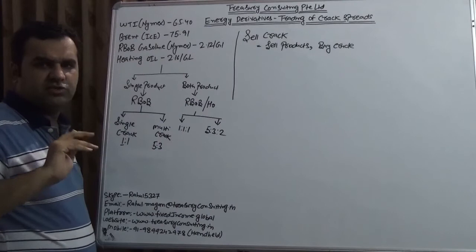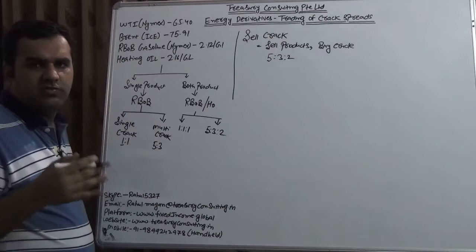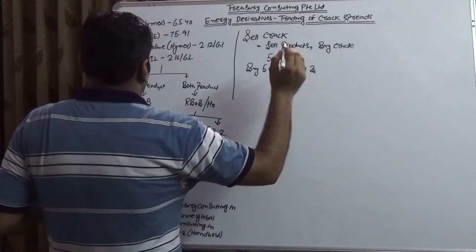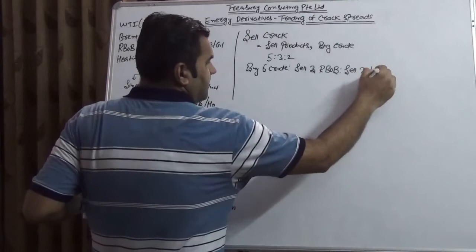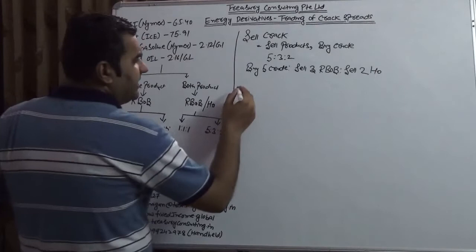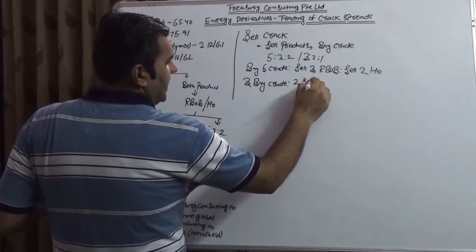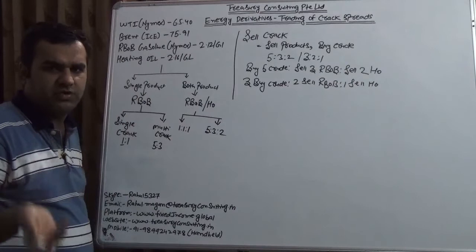Sometimes the ratio is 1-to-1. Now let's take an example of a practical ratio, which is 5-to-3-to-2. Since I am doing a sell crack, what I would be doing: I am buying 5 crude, I am selling 3 RBOB (gasoline), and I am selling 2 heating oil (HO). There are people who go with 3-to-2-to-1 also. Those going with 3-to-2-to-1 are buying 3 crude, selling 2 RBOB, and selling 1 heating oil. And there are multiple ways — some people are going with 1-to-1-to-1 also.